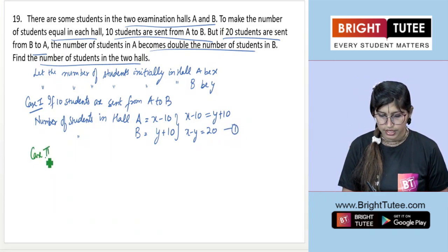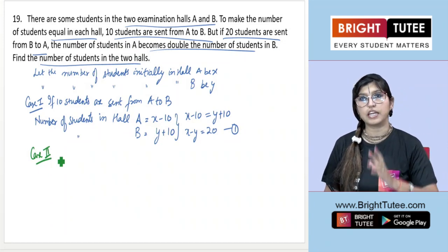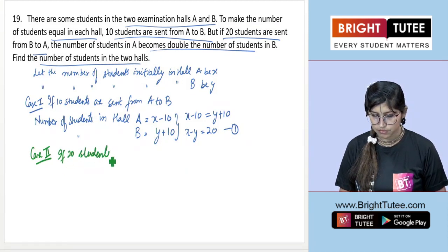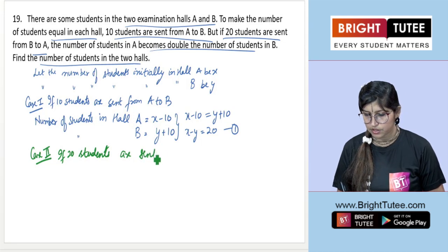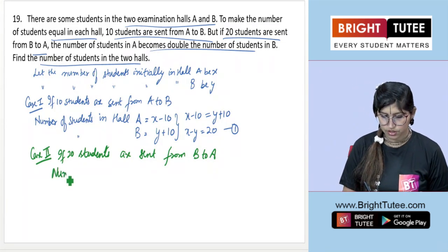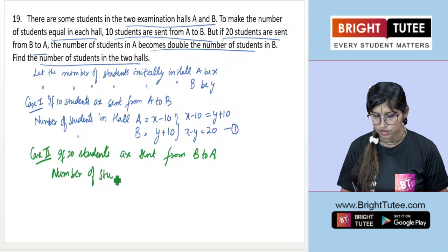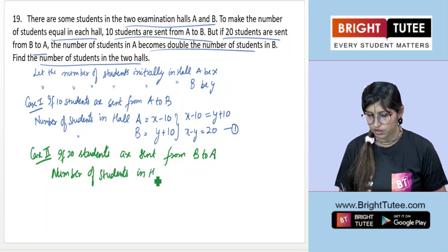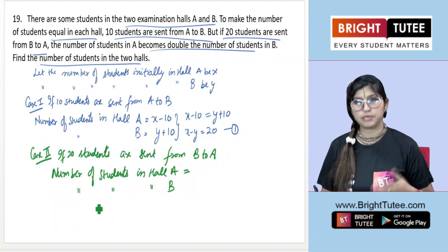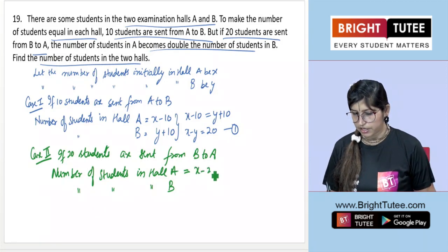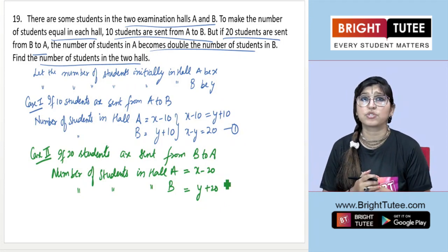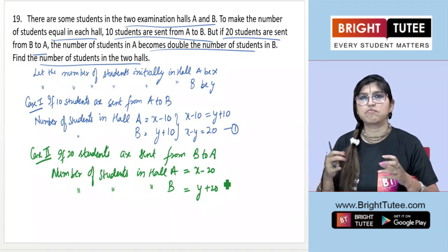Case 2: If 20 students are sent from B to A. A common mistake here is that some students carry over the values from Case 1 — using x minus 10 and y plus 10 — and then adjust by 20, writing x minus 20 and y plus 20. That is incorrect. I'm pointing out all these mistakes because most students make them.